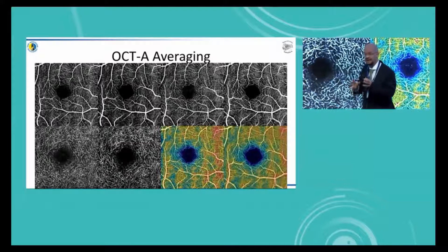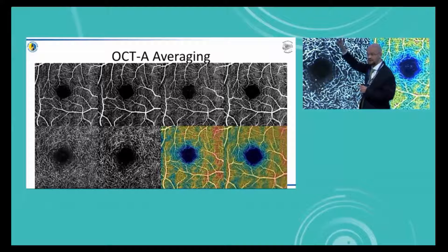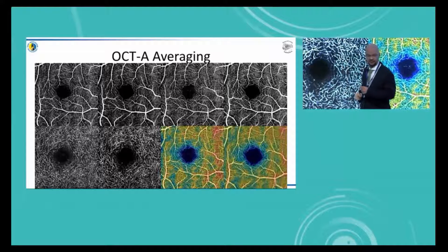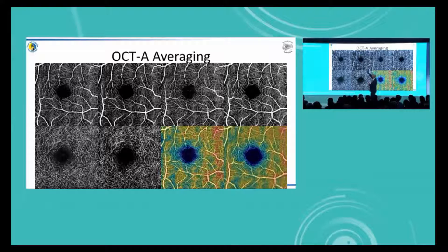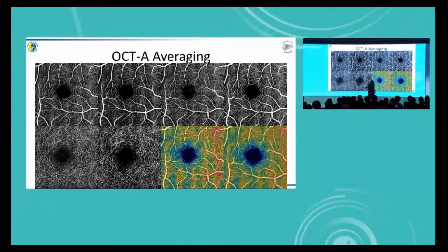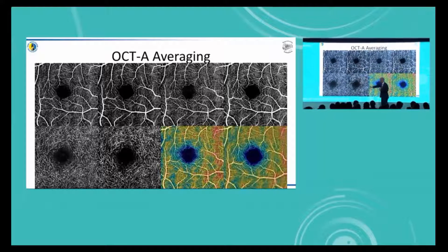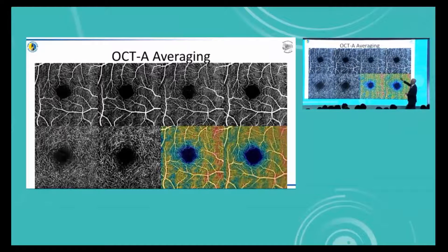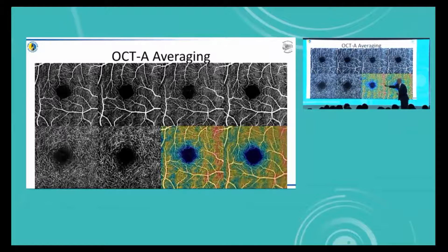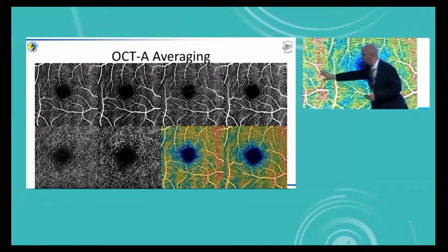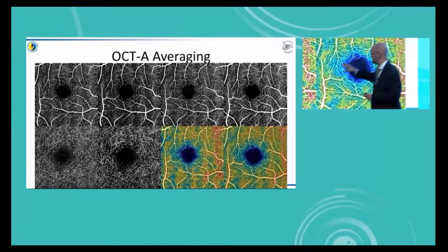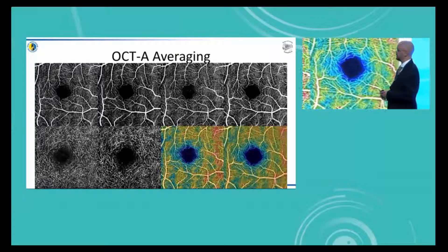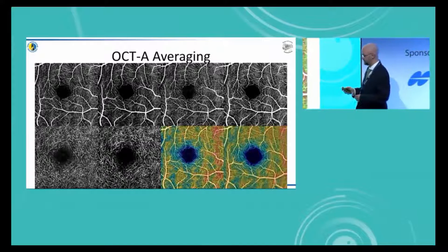That is absolutely critical if you're going to do measurements on the area of the foveal avascular zone, so doing averaging can really significantly help. In the deep plexus, you can see a lot more detail in the averaged image and you can see where there are changes in the deep vessels. The same is of course relevant when doing vascular density maps — the averaged image shows a lot more detail and quality than the original image.